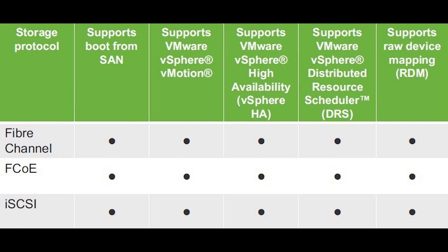Fiber Channel Protocol is a protocol used on Fiber Channel networks. It provides higher throughput than a local area network. It's a gigabit speed network technology used for storage area networking, and it's the standard protocol for open systems.